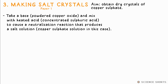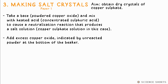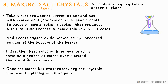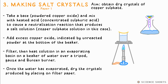Chemistry 3: Preparing Copper Sulphate Salt Crystals. We take a base like copper oxide and an acid like concentrated sulphuric acid. A base essentially just means something that can neutralise an acid. We heat the acid first in a beaker, then add excess copper oxide. You can tell it's in excess when there's some unreacted powder at the bottom of the beaker. The neutralisation reaction makes copper sulphate solution. We filter the unreacted copper oxide out, then gently heat the solution in an evaporating basin over a beaker of water on a tripod above a Bunsen burner flame, and you're left with solid crystals of copper sulphate.